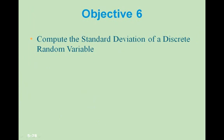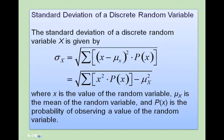Objective 6: compute the standard deviation of a discrete random variable. The standard deviation sigma sub x equals the square root of the sum of x minus the mean, squared, times the probability of x. This is also equal to the square root of the sum of x squared times P of x, minus the mean of x squared. Here, x is the value of the random variable, mu sub x is the mean, and P of x is the probability of observing that value.